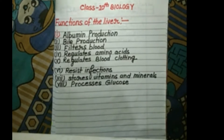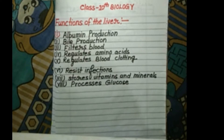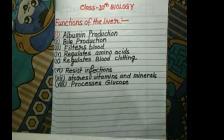The third function is that the liver filters blood. The liver also filters the blood leaving from the stomach and small intestine. Blood from the small intestine and stomach passes through the liver, which removes harmful substances and toxins from the blood. This filtering process is an important function of the liver.